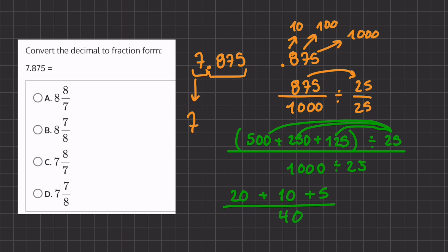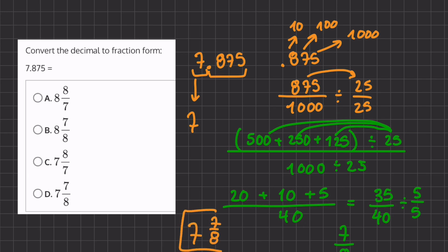Now let's simplify our fraction even more. We have 20 plus 10 plus 5, which is 35, all over 40. We have one more simplification to do — we'll divide by 5. 35 divided by 5 is 7, and 40 divided by 5 is 8. So putting our two numbers together, our final answer is 7 and 7 eighths.